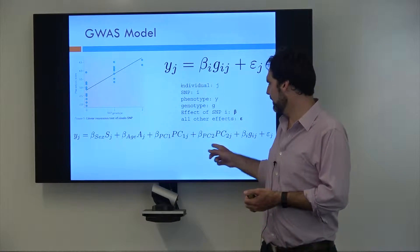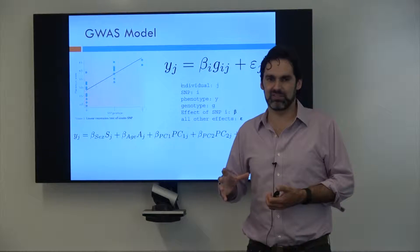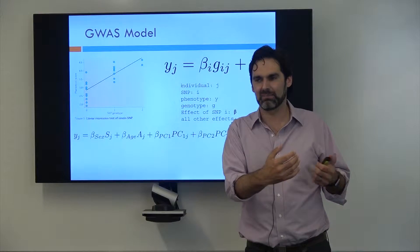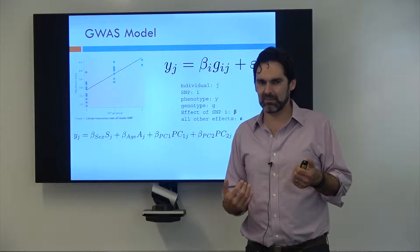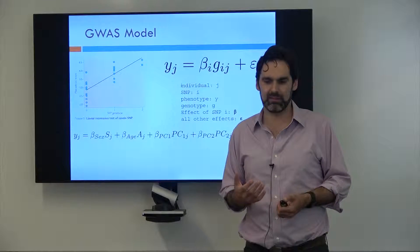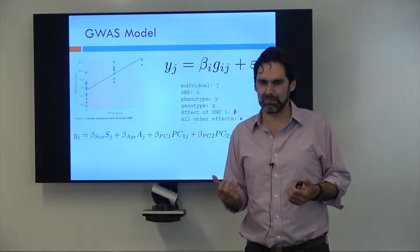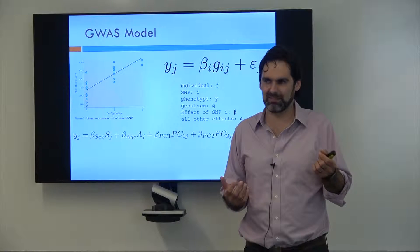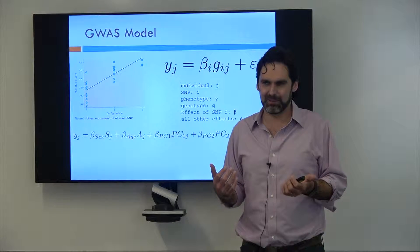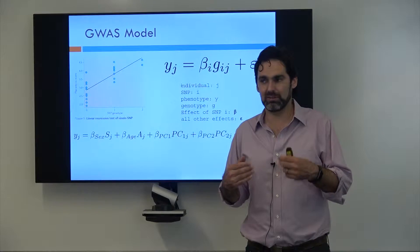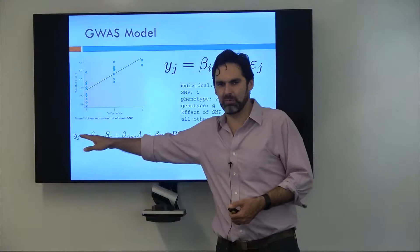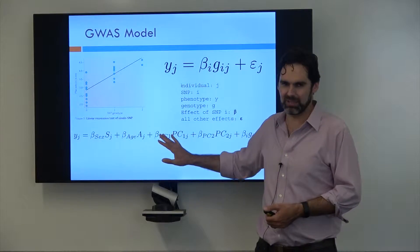What these do is they remove that population structure, because it could be that most of your cases are from northern Europe and most of your controls are from southern Europe. Then you might get the lactose gene showing up, which possibly has nothing to do with the trait you're interested in, but people in northern Europe have a higher prevalence of the lactose gene and people in southern Europe have a lower prevalence. So you might get differences that are just due to population structure and not due to the genetics having an effect.